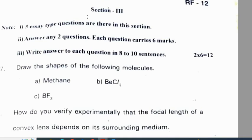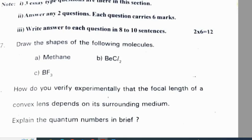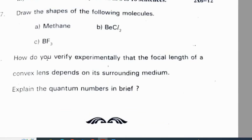Rangareti district pre-final 2 question paper, Section 3: Draw the shapes of the following molecules — BF3, BeCl2, methane. How do you verify experimentally that the focal length of a convex lens depends on its surrounding medium? Explain the quantum number in brief.